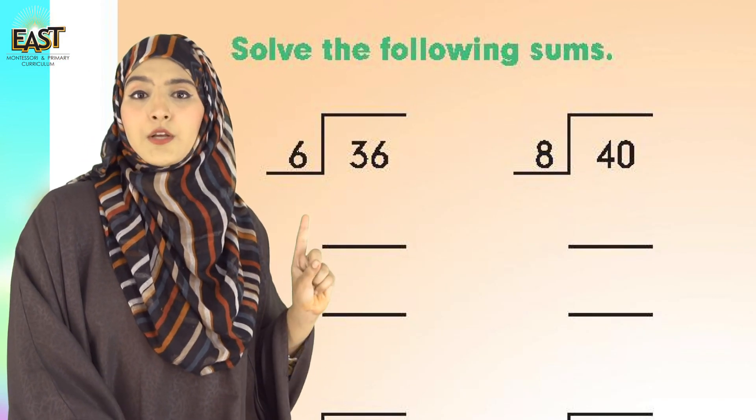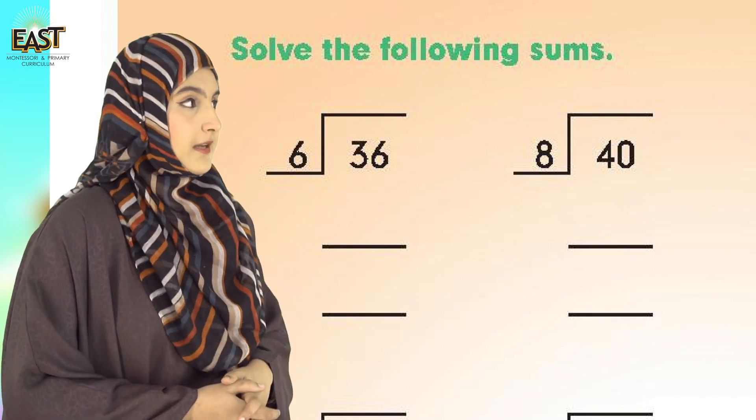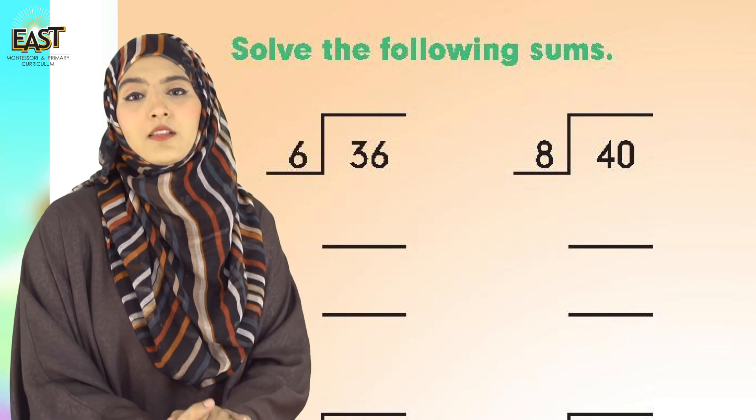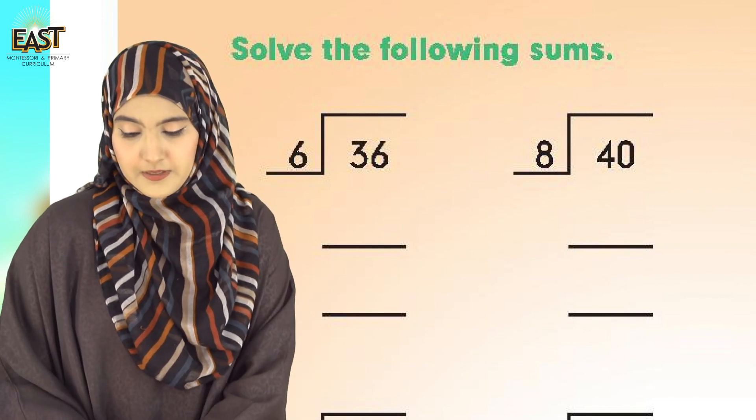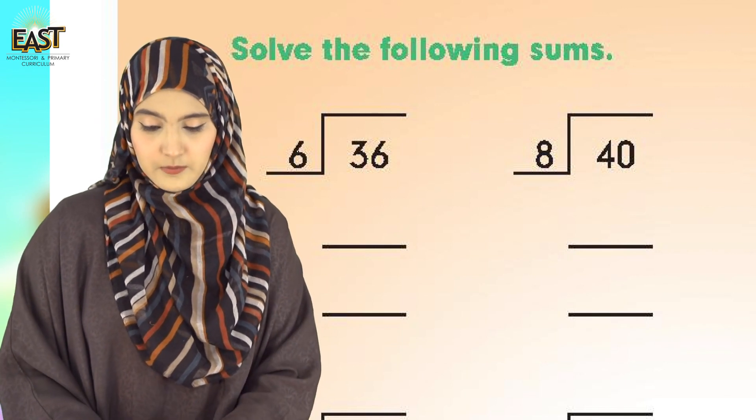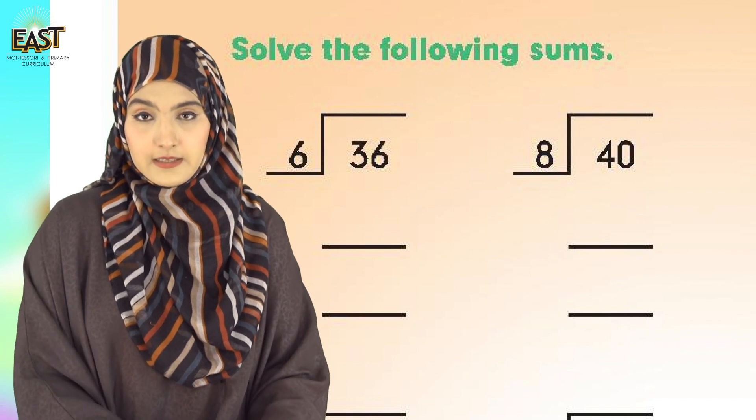We have to divide 36 by 6. This is the house of division method, which is also very easy if you have learned multiplication tables. If you have learned multiplication tables, I am sure it will be very easy for you.